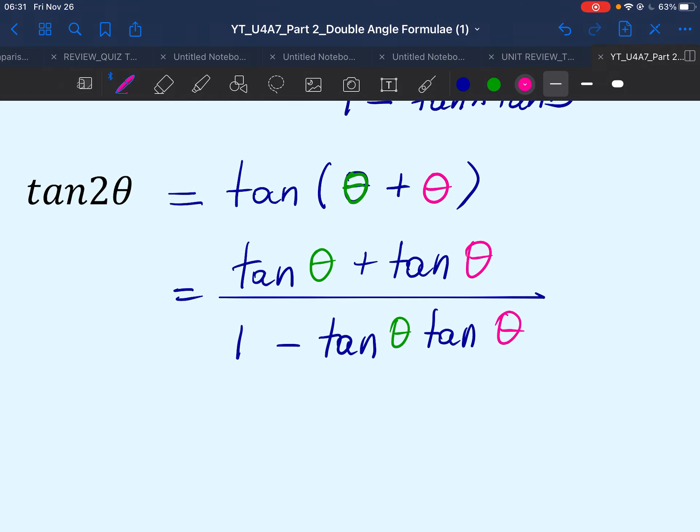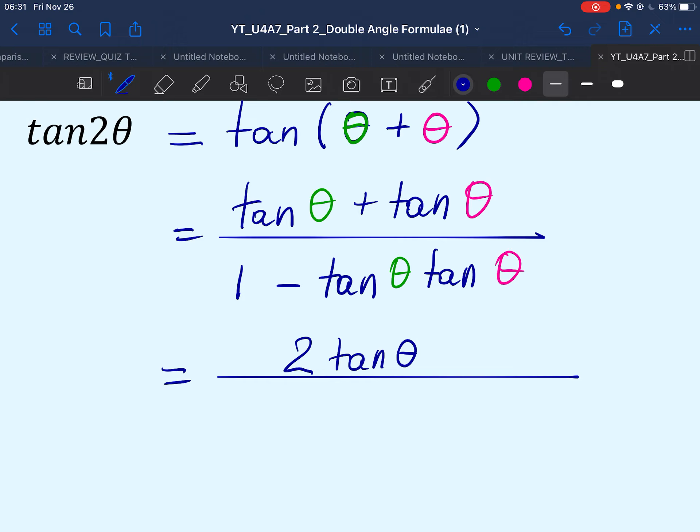So, let's simplify this. As you can see, the numerator has two like terms. They will add to 2 tan theta and in the denominator we have tan theta multiplying itself which makes it 1 minus tan square theta. Tan 2 theta everyone.